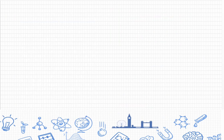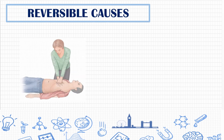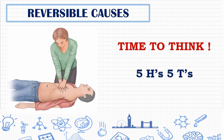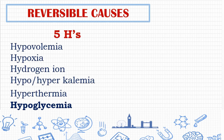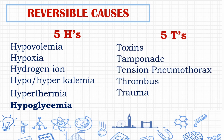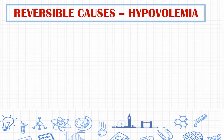In cardiac arrest, apart from CPR, defibrillation, and medication, it's time to think about the possible reversible causes. They are the five H's and five T's. The five H's are hypovolemia, hypoxia, hydrogen ion, hypo/hyperkalemia, and hypothermia. A sixth H to consider is hypoglycemia. The five T's are toxins, tamponade, tension pneumothorax, thrombus, and trauma.